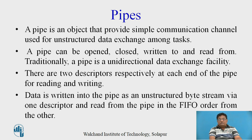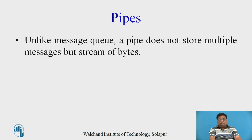A pipe is an object that provides a simple communication channel used for unstructured data exchange among tasks. A pipe can be opened, closed, written to, and read from. Traditionally, a pipe is a unidirectional data exchange facility. There are two descriptors, one at each end of the pipe, for reading and writing. Data is written into the pipe as an unstructured byte stream via one descriptor and read from the pipe in FIFO order from the other. Unlike a message queue, a pipe does not store multiple messages but stores a stream of bytes.